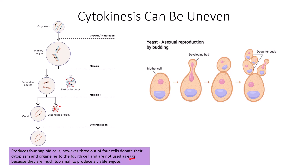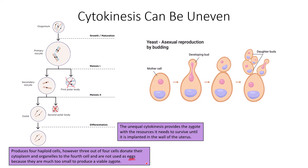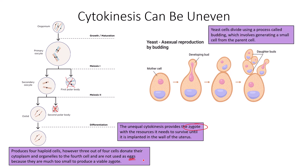All of these polar bodies serve as temporary placeholders for chromosomes that will eventually be discarded and returned to the body. The unequal cytokinesis provides the zygote with the resources it needs to survive until it is implanted in the wall of the uterus. The zygote is produced as a result of fertilization of this mature ovum with a sperm cell.